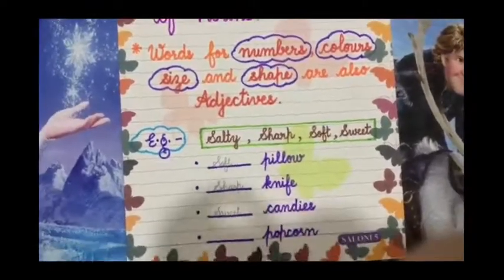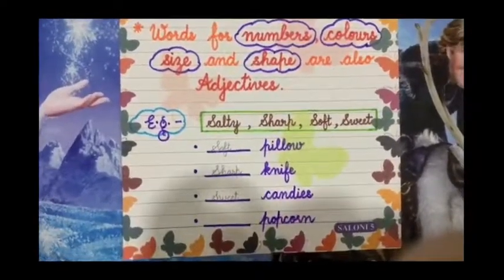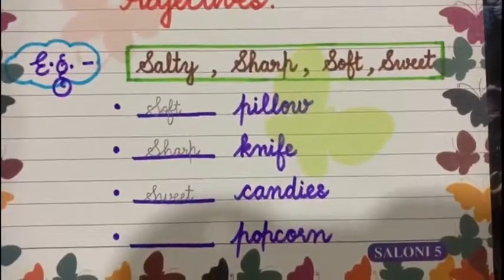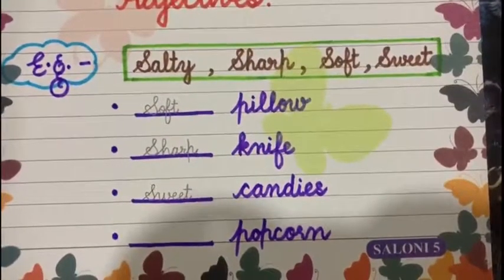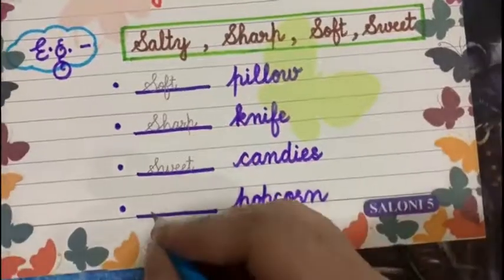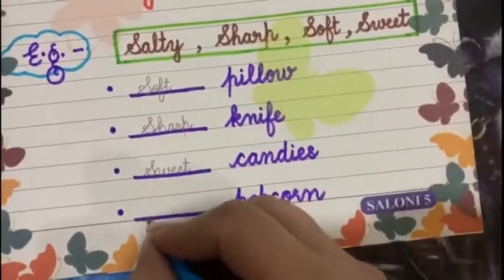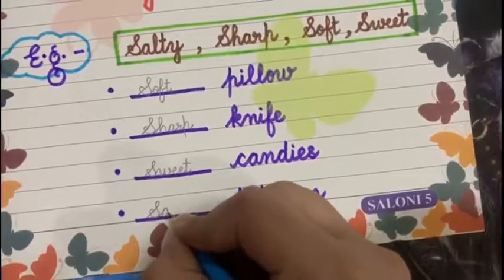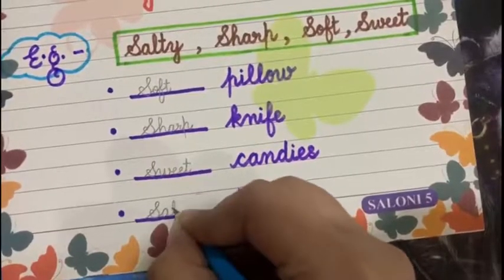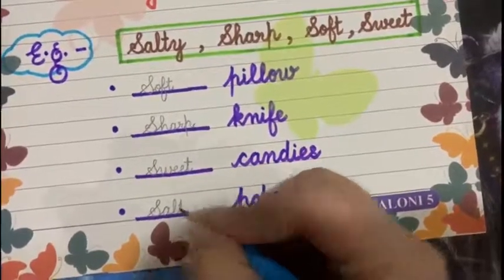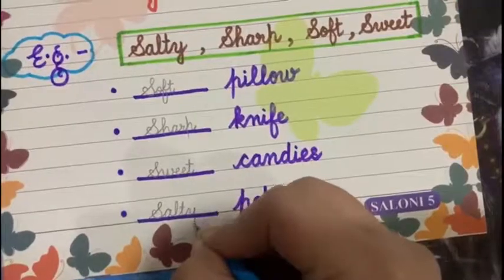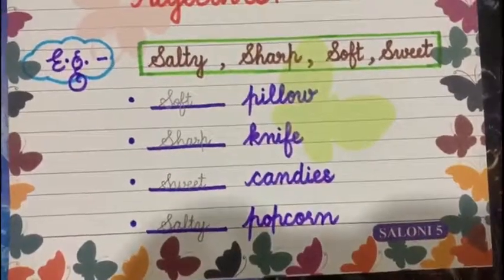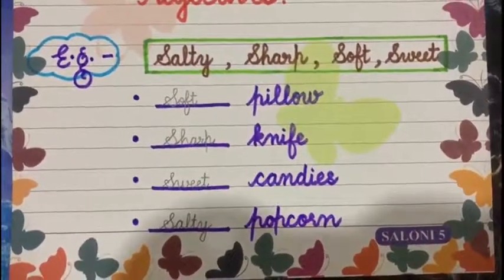And the last one is popcorn. The hint left is salty, so the correct adjective would be salty — S, A, L, T, Y, salty. So this is how adjectives are to be done.